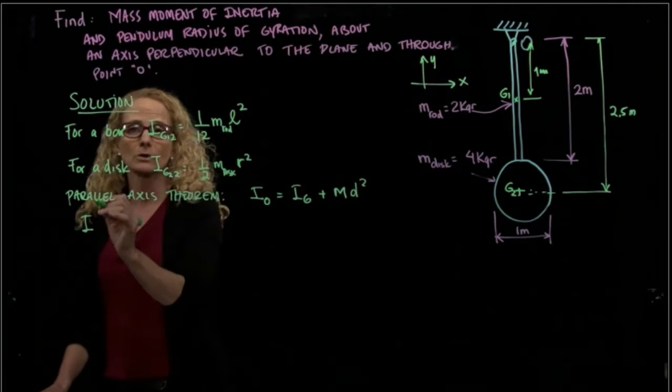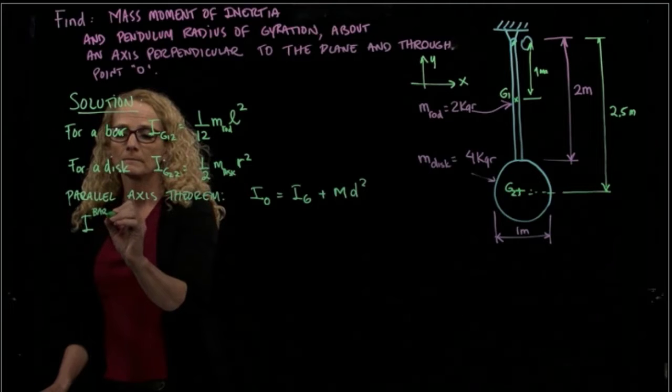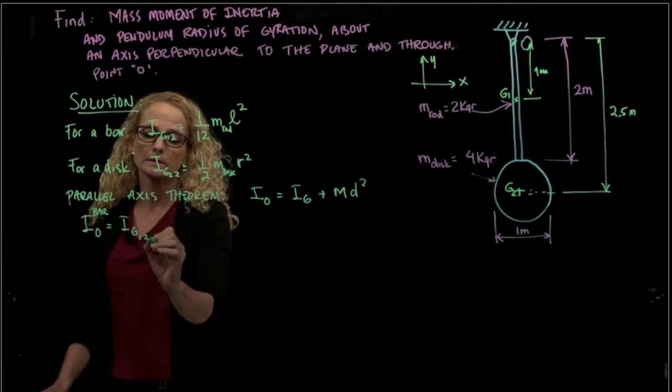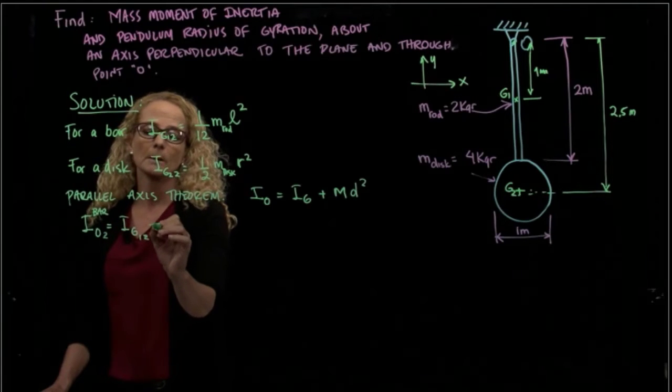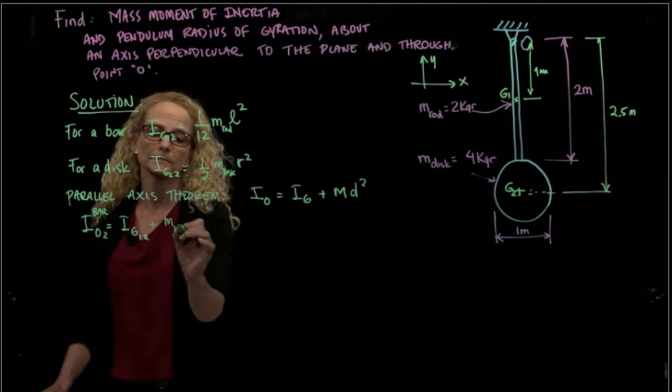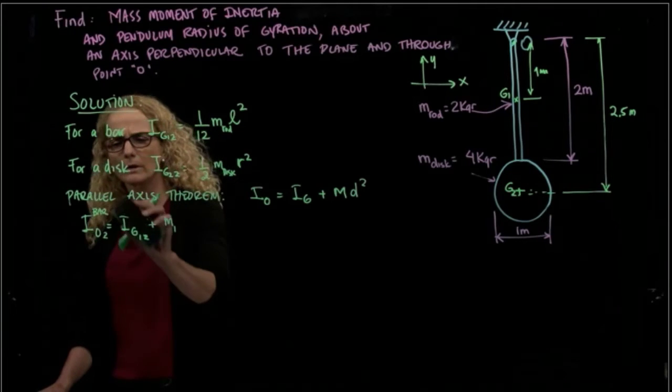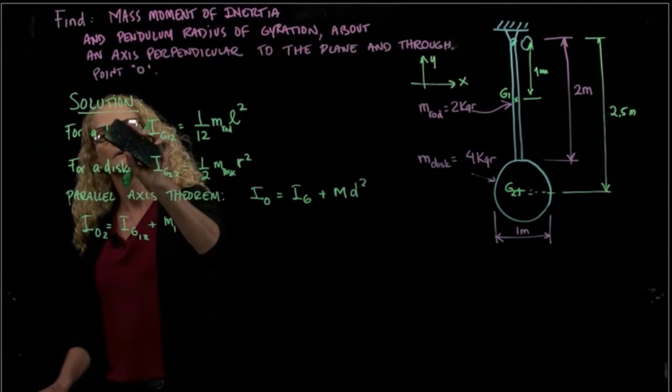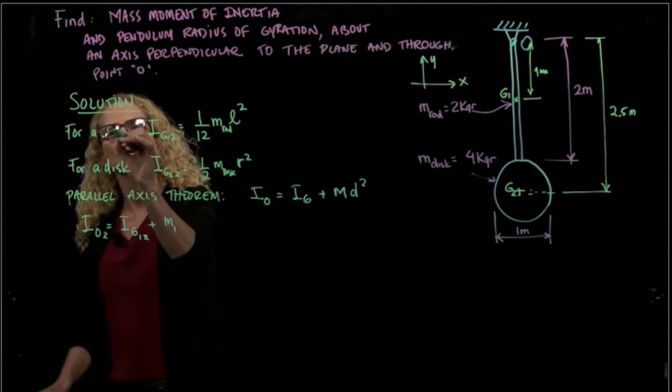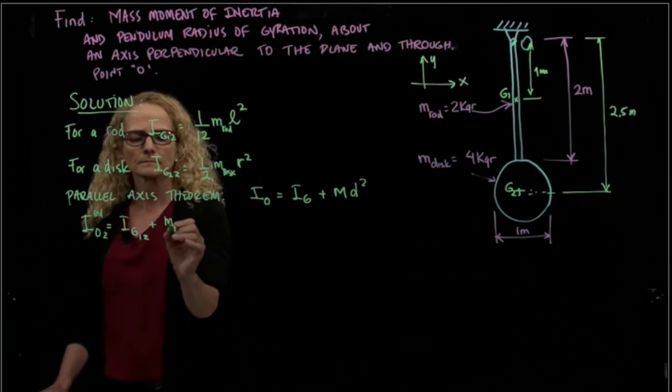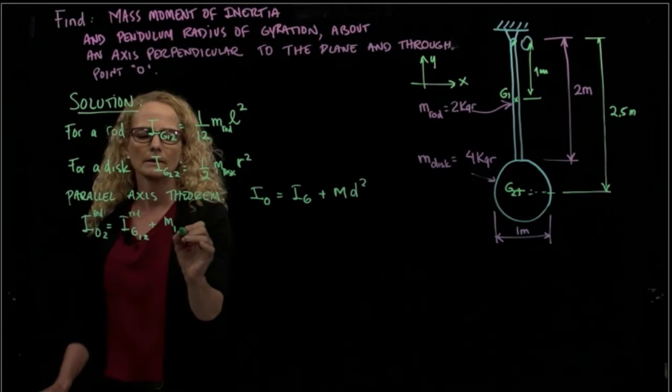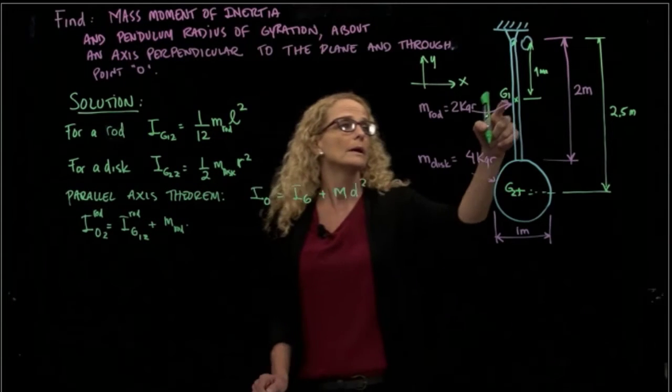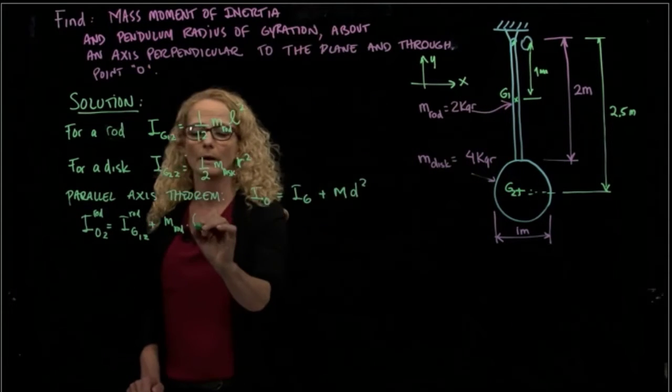So, in the case of the bar, let's call it the bar, in O will be the inertia of G1 in Z, this is all Z, plus the mass of the bar. I call it rho, let me call it rho because to be consistent all the way through, so let me call it here, rod, which is the same as a bar, but just to be consistent. So this is the rod, mass of the rod, times the distance. What will be the distance between that point and the O? It will be 1 squared.